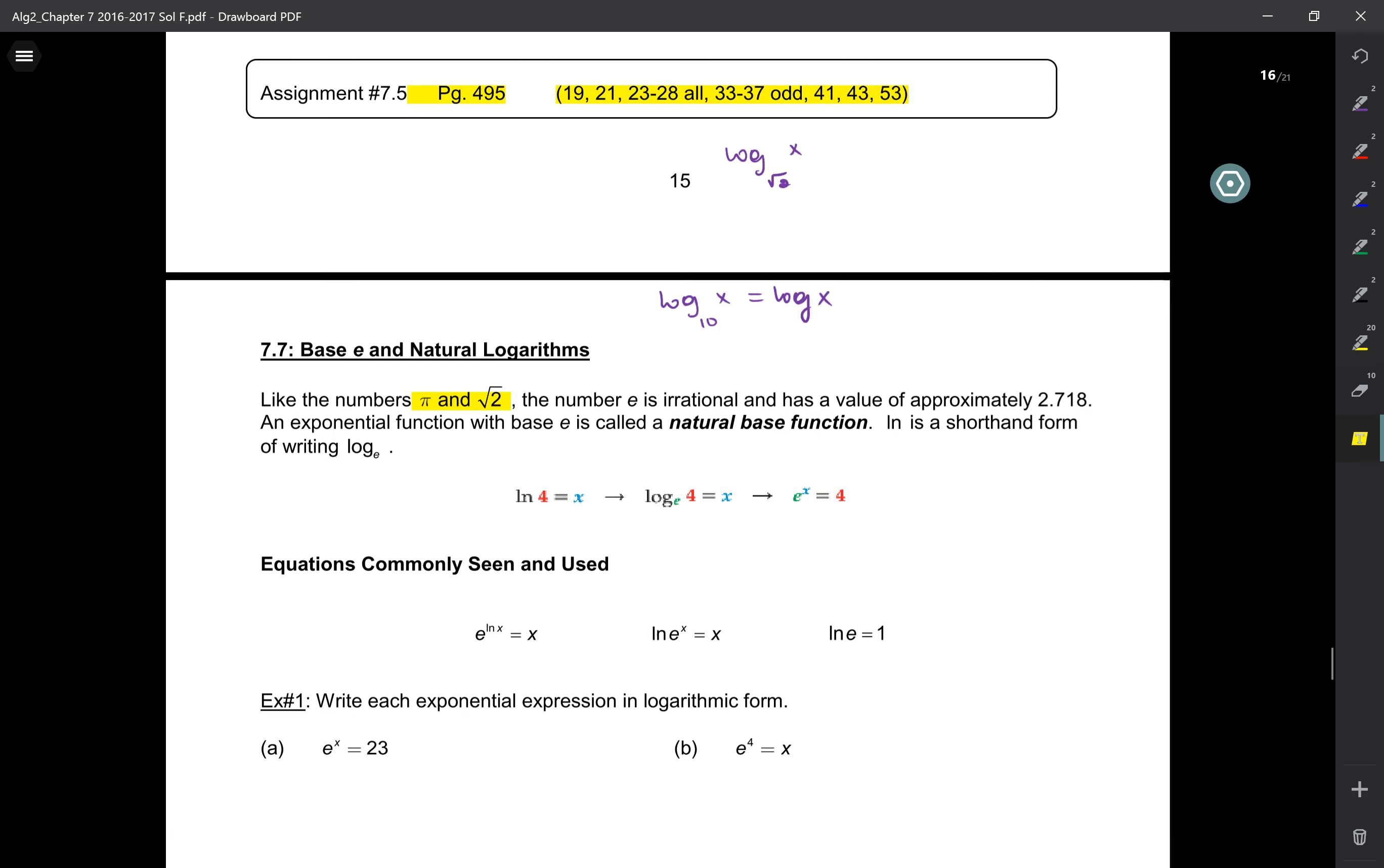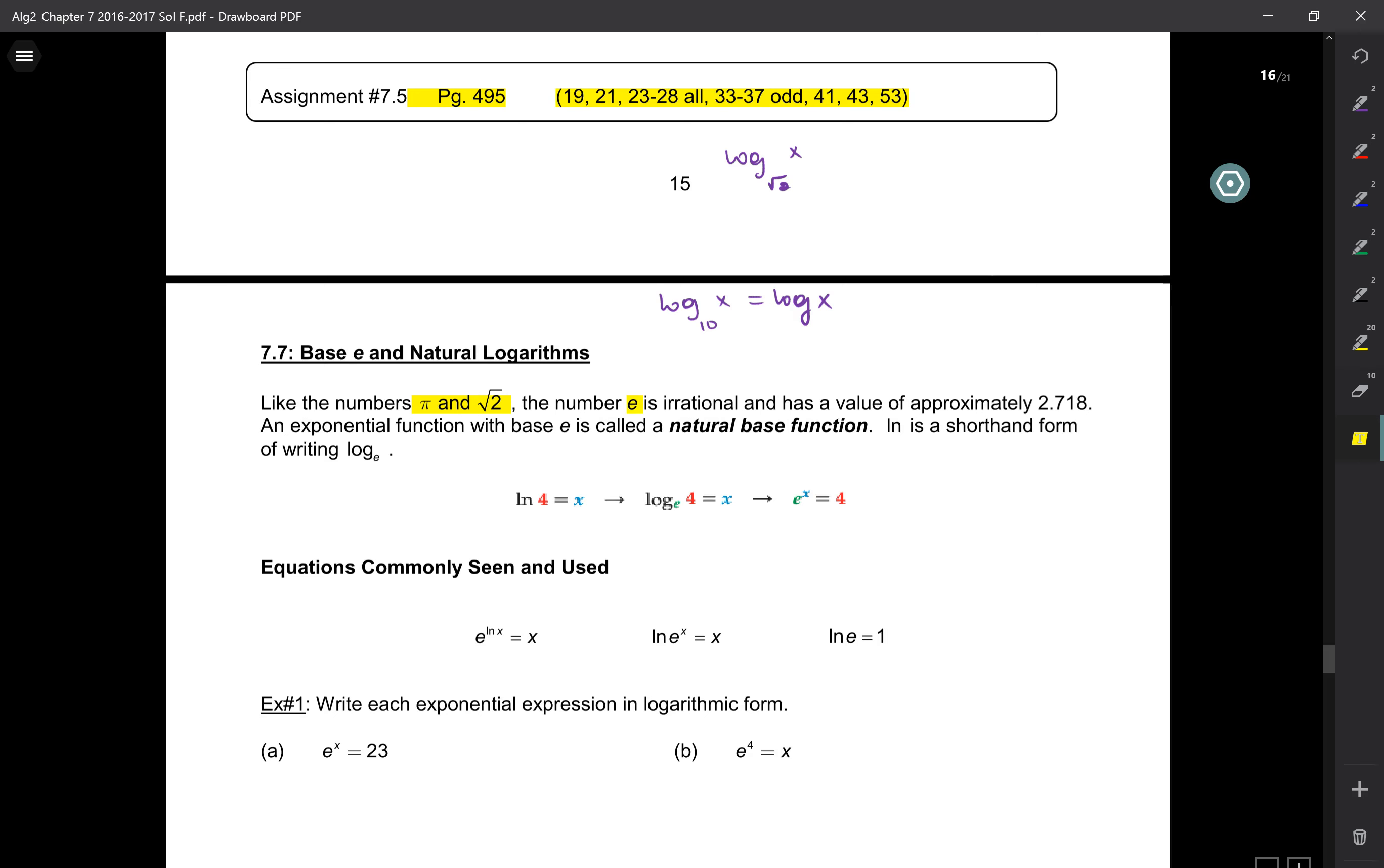Now, there is yet another number in math that we are not introduced to until today. Just like pi and root 2 are irrational numbers, pi is a number that never ends, root 2 is a number that never ends. There is another one called E. This number E, it's named E because of the scientist who came up with it. His name is spelled E-U-L-E-R, Euler. This number E is similar to pi in that it's a constant that never ends. It's an irrational constant that never ends. E has the value 2.718.